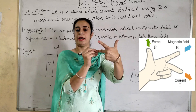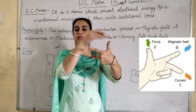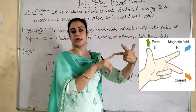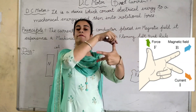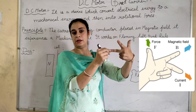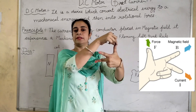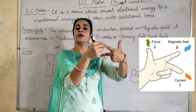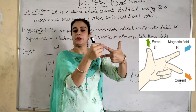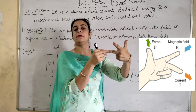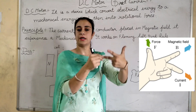Children often get confused about the direction. Here is a memory aid in short form: Father, Mother, Child. F for Father means F for Force. M for Mother means direction of Magnetic field. C for Child means C for Current.